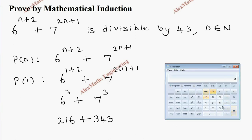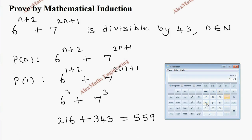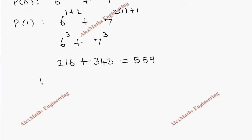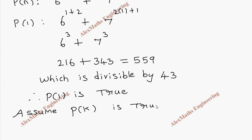Adding both: 216 + 343 = 559. We have to check whether it is divisible by 43 — yes, 559 is divisible by 43. Therefore P(1) is true.